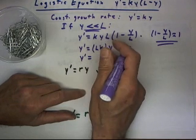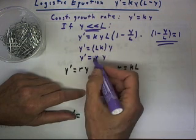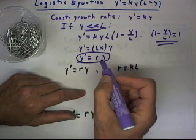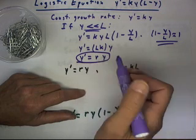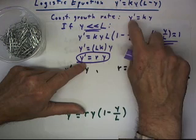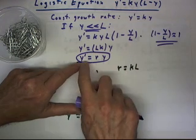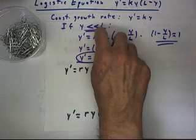Well, instead of writing Lk, we could just use a single variable like r, and we can say that then this is very much like the equation y' = ry, which is not an uncommon form for exponential growth. I've used the form y' = ky, but this is y' = ry. So that as long as y is much less than L...